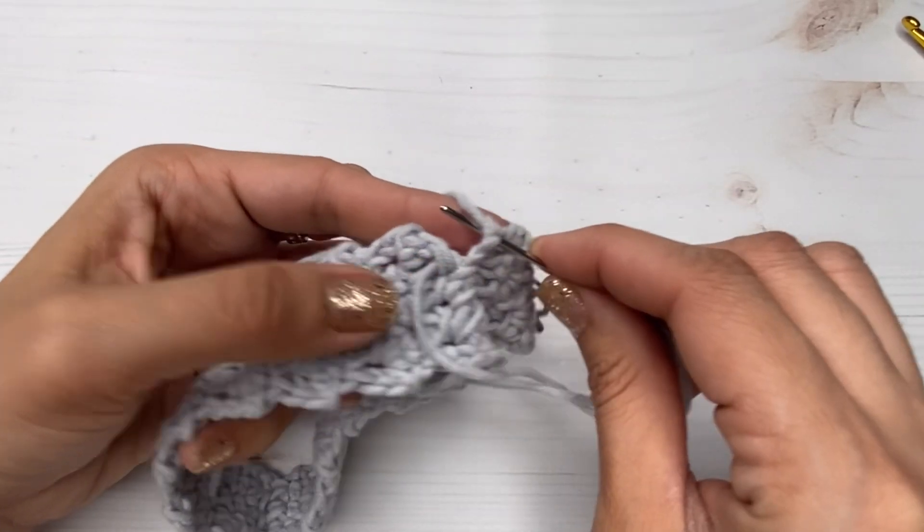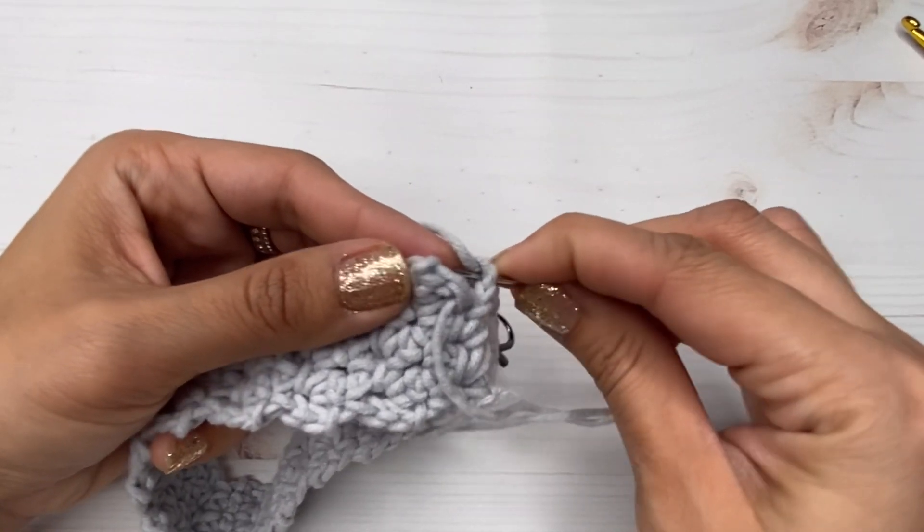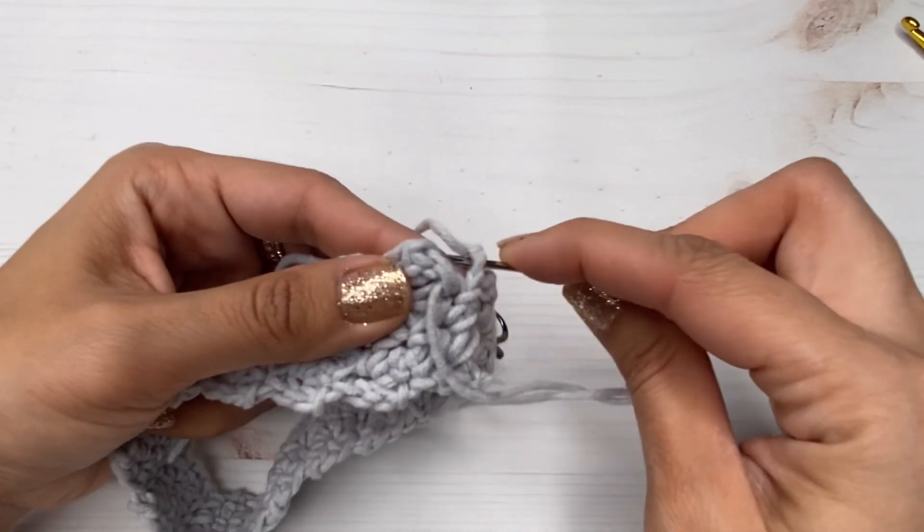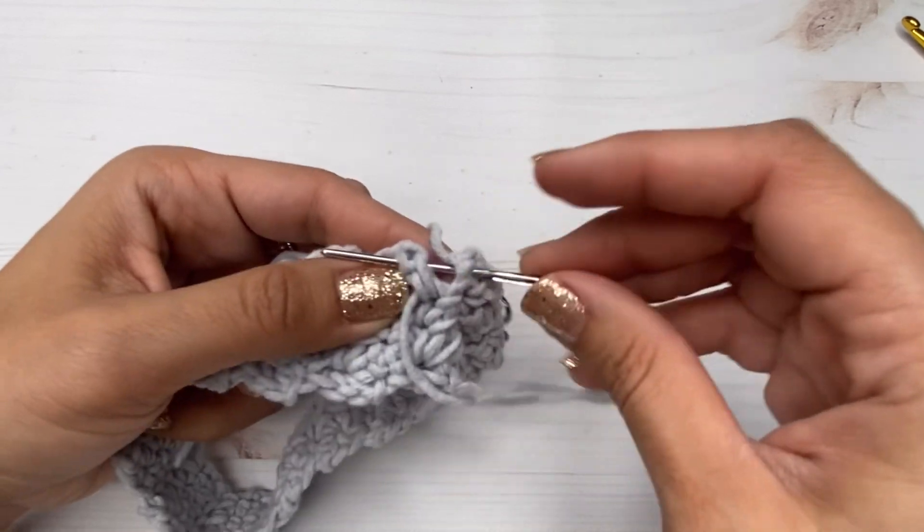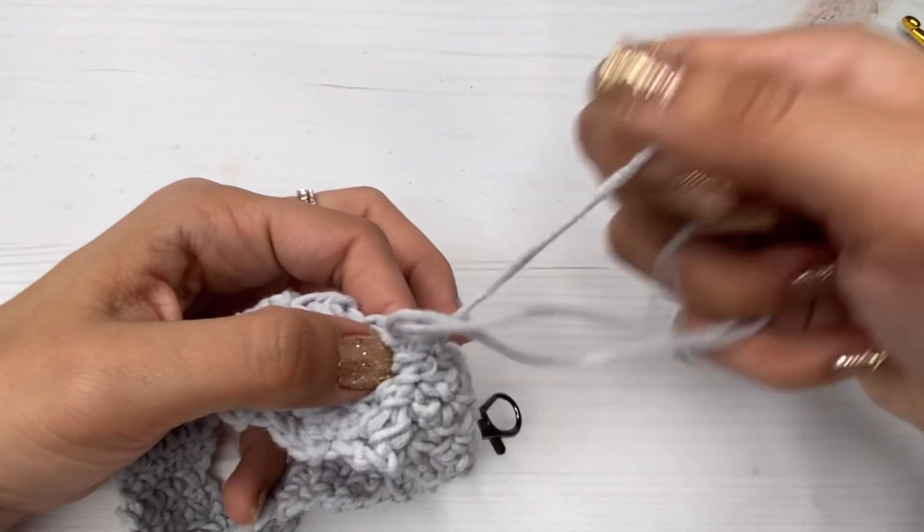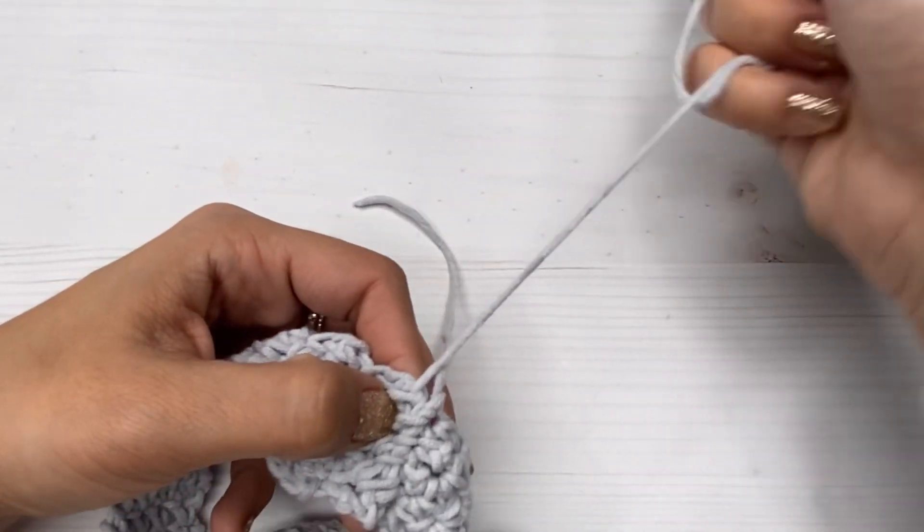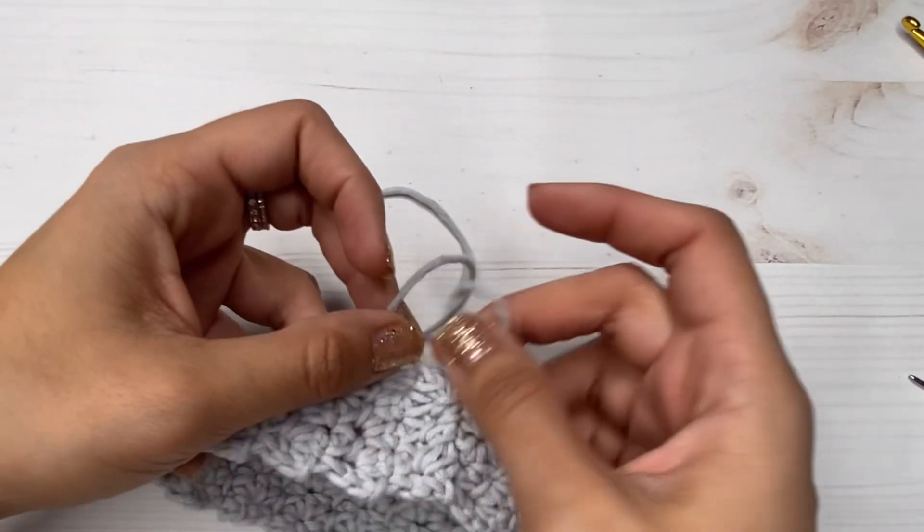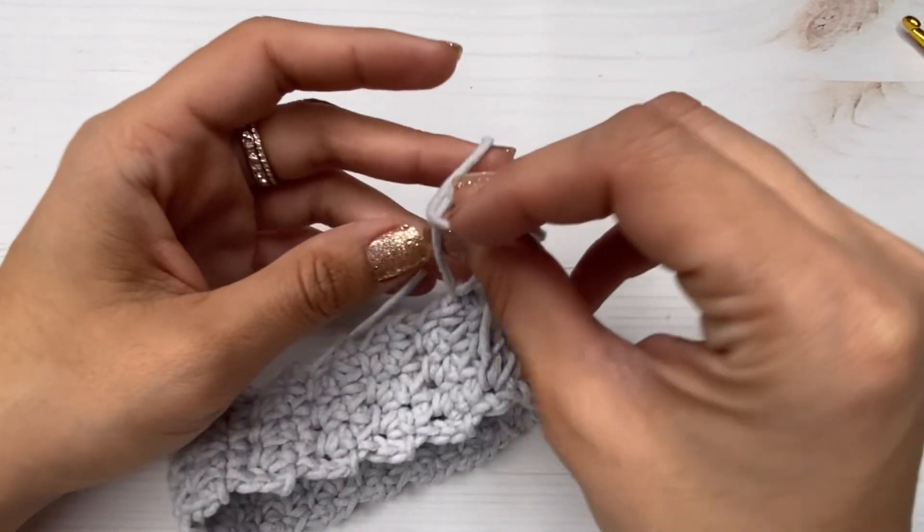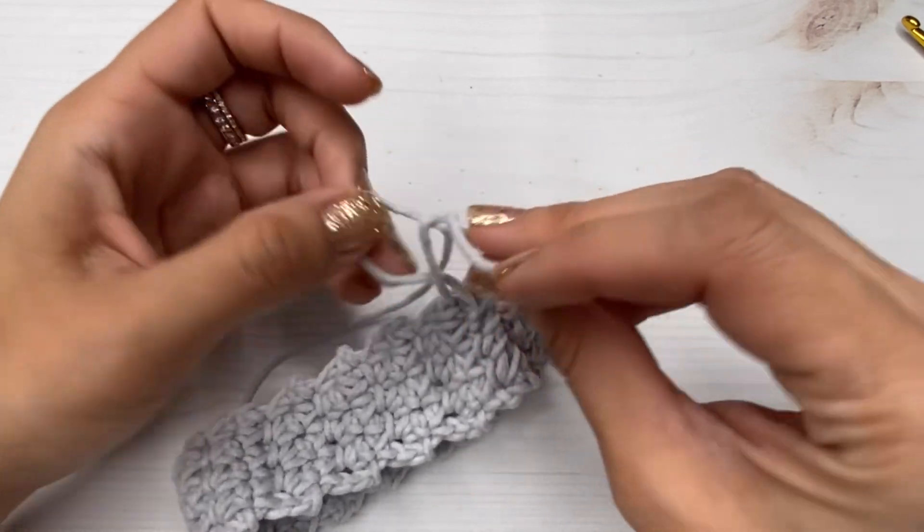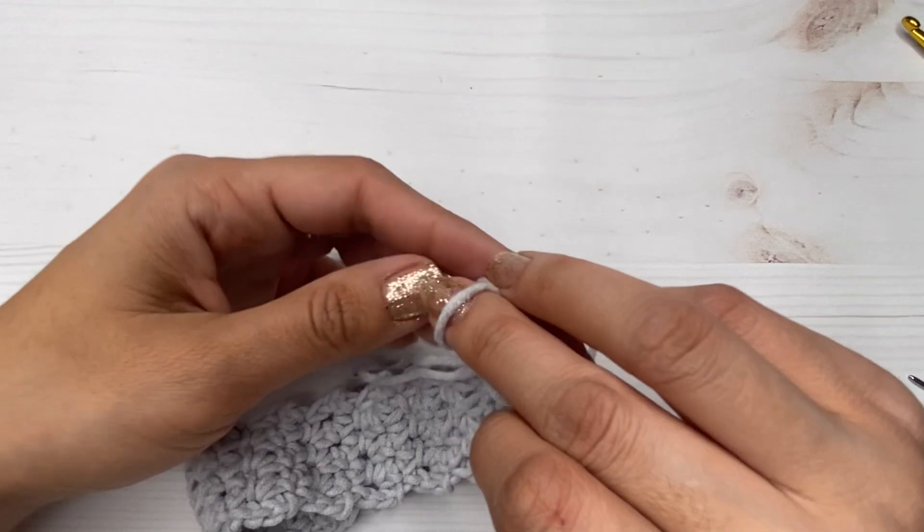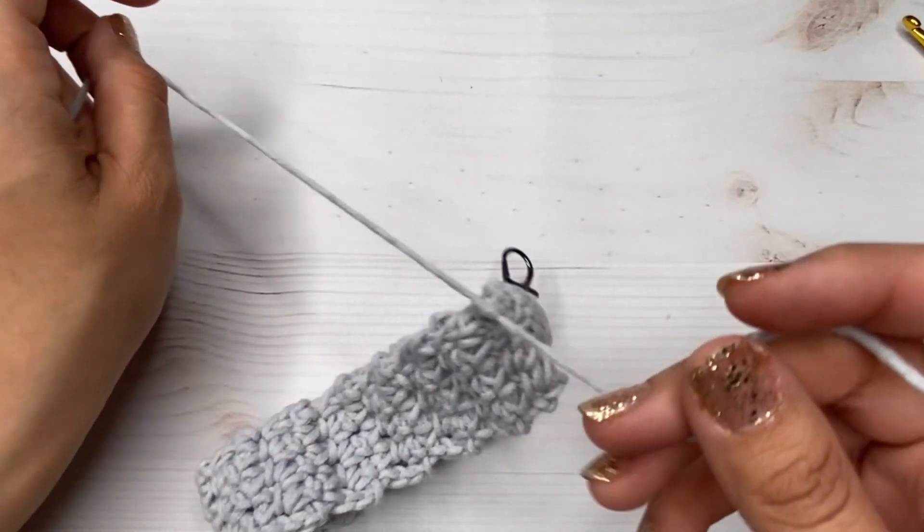All right, so here I am almost done. I just need to close that very end here, and after that we're just going to weave in our ends into our project and pretty much be done. And I like to tie these two ends together just so that nothing comes undone, and I like to do that twice. Then after that I just weave it into my project.